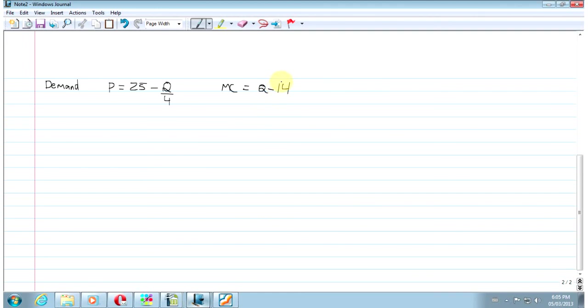So, again, same solution, doing the same thing to solve for a monopoly. Revenue is 25Q minus Q squared over 4. Marginal revenue is 25 minus 1 half Q. Again, set that equal to marginal cost.